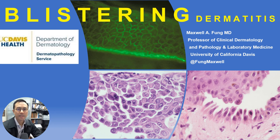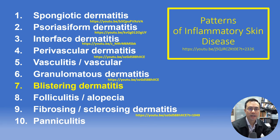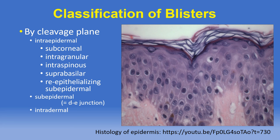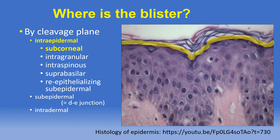Hello, this is Dr. Max Fung, University of California Davis in Sacramento, California. In this session we'll be focusing on blistering diseases with emphasis on inflammatory blistering diseases. We'll start by examining the key parameters for classifying blistering disorders including the cleavage plane or anatomic site of the blister, the histopathologic features that give us clues to the mechanism of blister formation, and the nature of the associated inflammatory response if any.